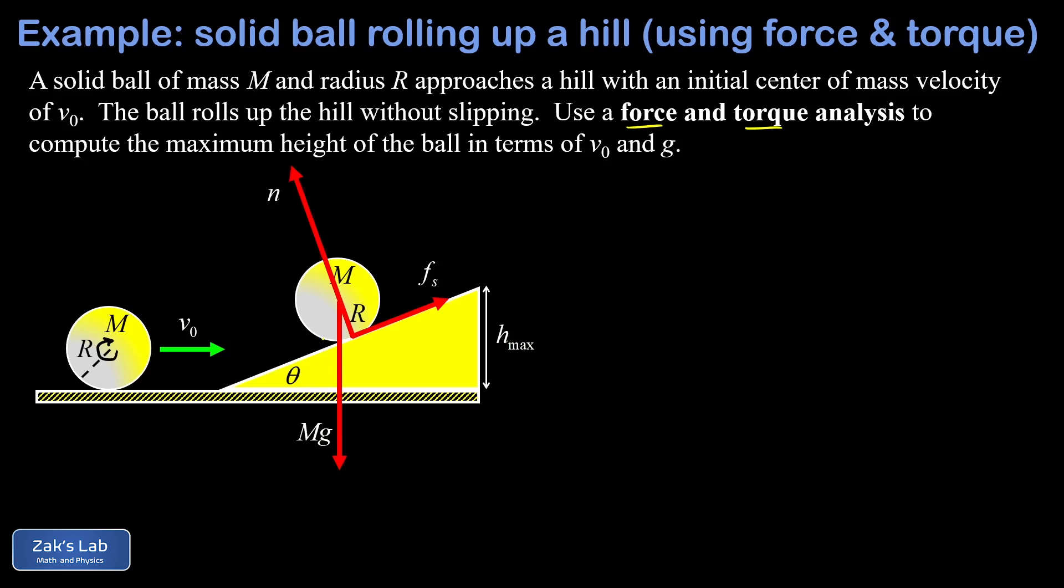Now recall that the angle of incline for a ramp is the same as the angle between the perpendicular and the vertical. And I'll post a link to a quick visual proof that I made for that fact. And this allows us to break the force of gravity into its components.